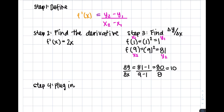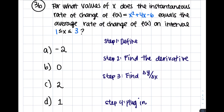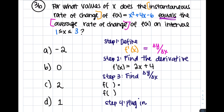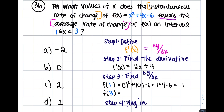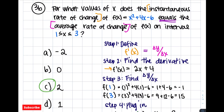Our final step is to plug in: our derivative 2x is set equal to our average rate of change of 10. We solve for x and end up getting 5. Now try solving problem 3b on your own using the same steps. Hopefully you end up with the final answer of C.